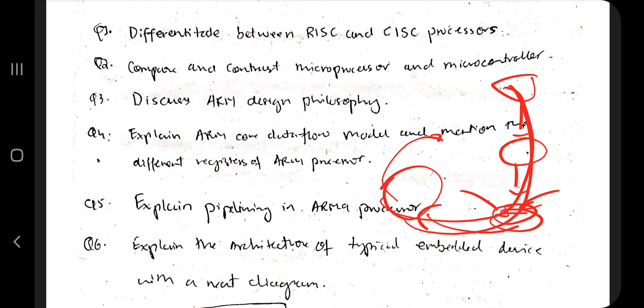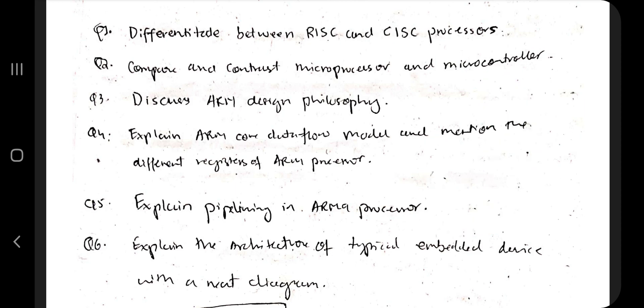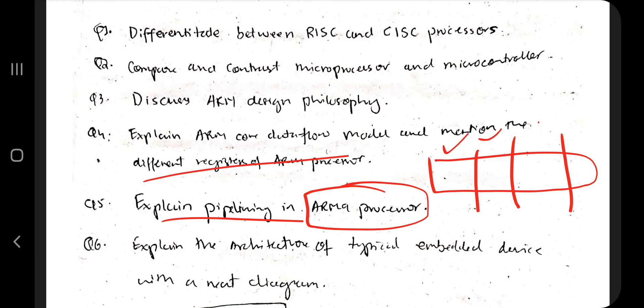Make the diagram, explain each component used here, label it very properly, and write a few sentences about each component. Then as a conclusion, write what is its core flow. Next is explain pipelining in ARM processor. In pipelining, you have four steps. All those four steps have different stages. What is the significance of each stage and the key process happening in each stage? That's what you have to explain in pipelining.